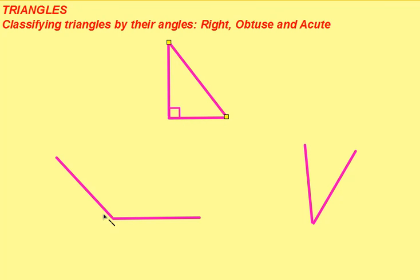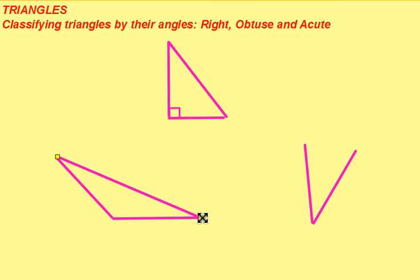This is an obtuse angle. If we connect the line segments, we now have an obtuse triangle, which by definition has one obtuse angle.